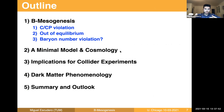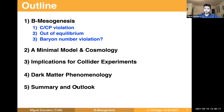So this is the outline of the talk. First, I'm going to tell you the main ingredients and features of the B-mesogenesis mechanism. Then I will illustrate it with a minimal model and highlight the cosmology. Then I will move into what I think is the most interesting part, which is the implications for collider experiments. I will discuss the dark matter phenomenology, and then I will summarize and give some outlook. Please feel free to stop me at any time and make questions and comments.